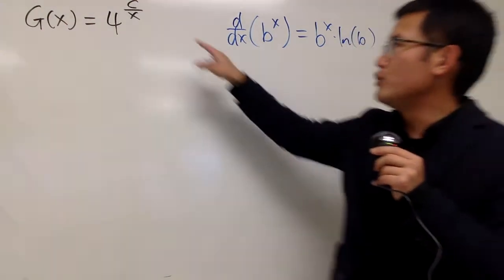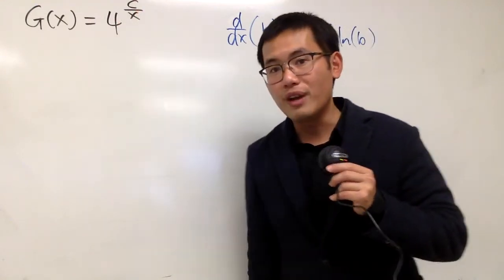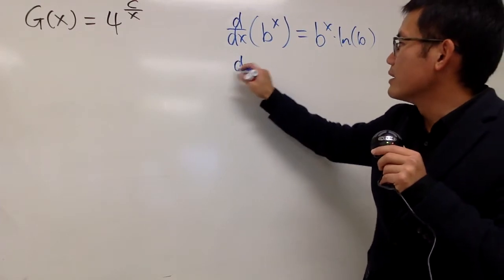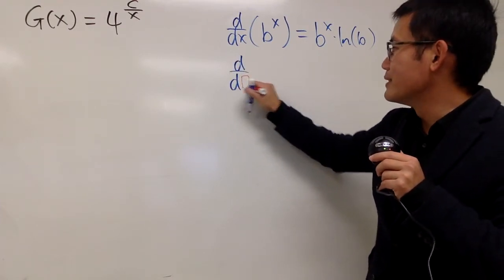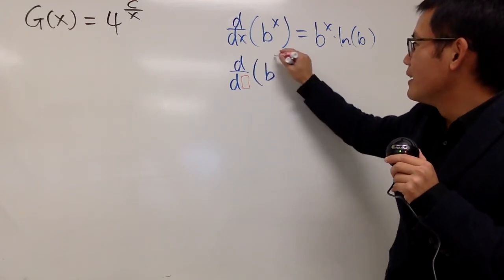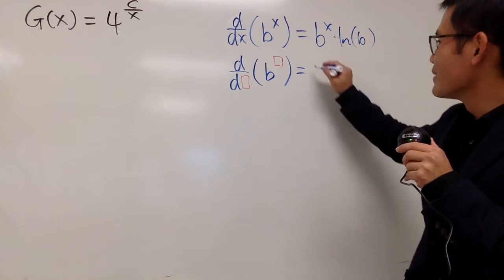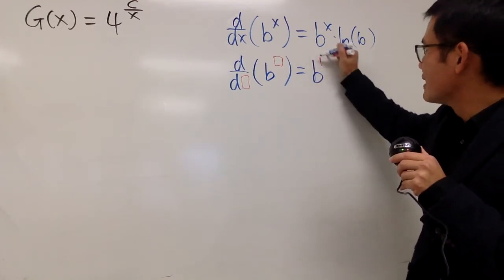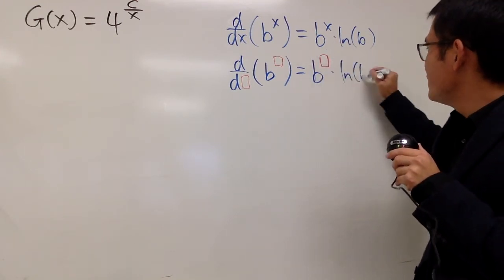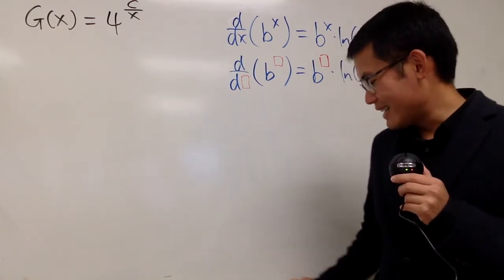And sometimes if you have more complicated things for the power, especially if you have c over x, remember the following. Sometimes I can write this down, d of a box, meaning to differentiate the following. If you have a box like this, what do we do? This right here tells you you do b to the box, but you still multiply by ln b. So, with this in mind, here, let's see how we get the derivative of this guy.